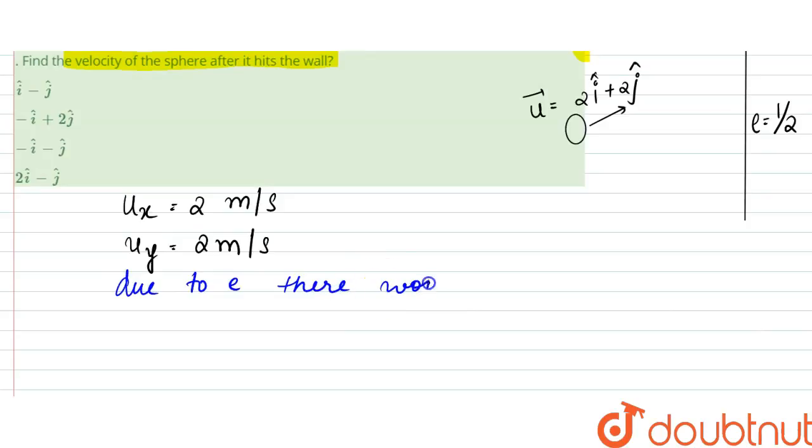So what we can say is that the velocity vector would be equal to v_x plus v_y along i and along j. First of all, I'll write this later on, but first of all we can find v_x.